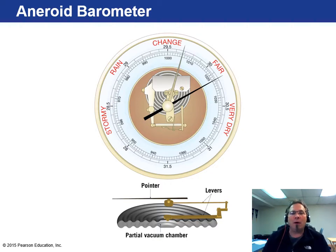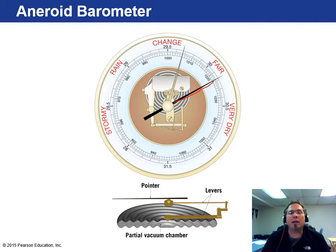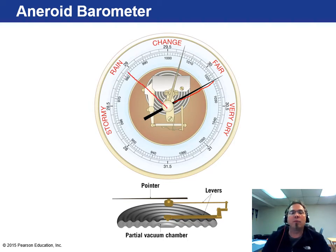The aneroid barometer uses a set of levers to detect very small changes in air pressure. As air squeezes it, it records high pressure; as it expands with lower air pressure, it records low pressure. Looking at this barometer image, you can see it's showing somewhat high pressure. We typically associate high pressure with clear skies, and low pressure with precipitation. If the dial were pointing to the low side, you could probably expect rain.